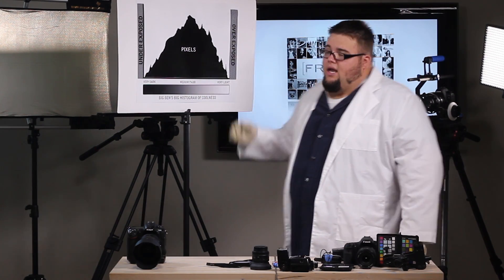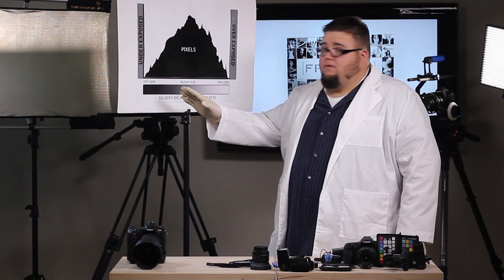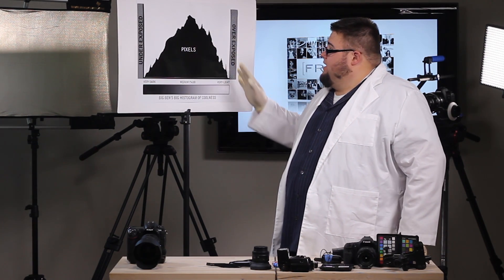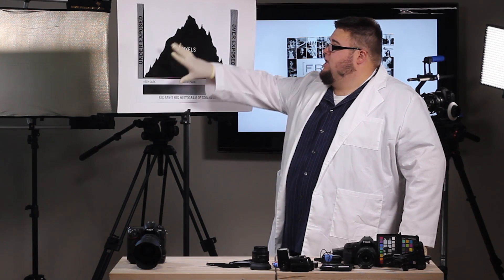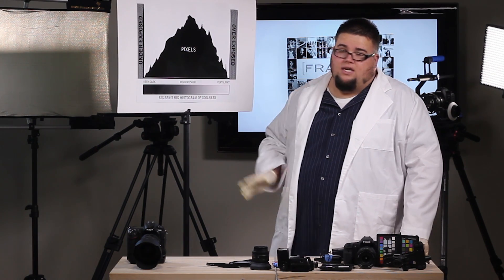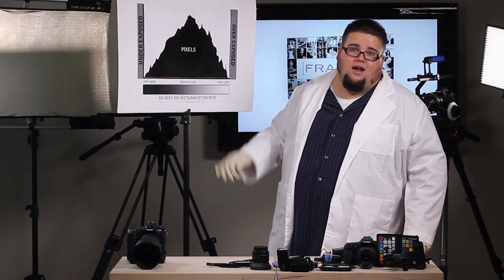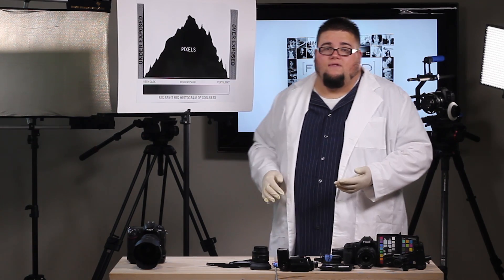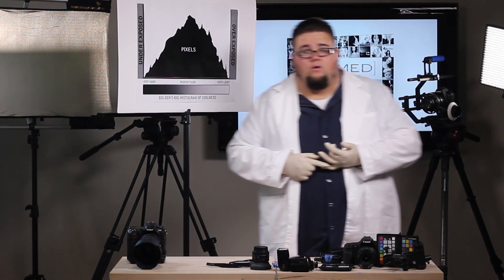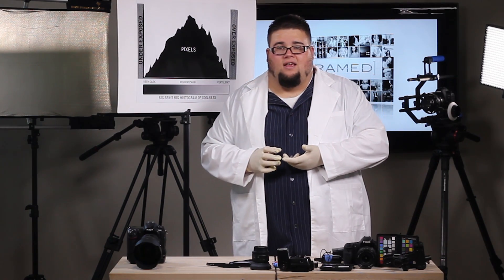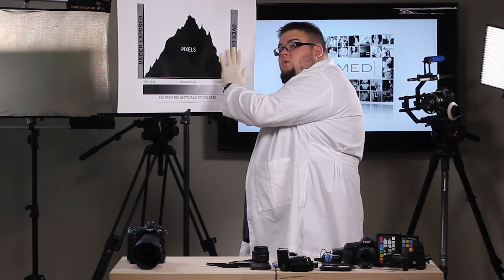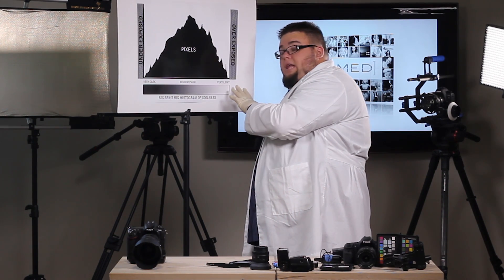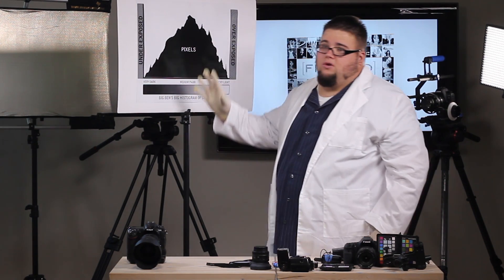So the key is when looking at a histogram, we want to make sure that we keep everything within the confines of the graph. So we want to keep everything in the middle, and obviously it doesn't have to be a perfect graph every time. Obviously environmental variables, the color and the tones of the image are going to impact that. Such as we were talking, if you're shooting a high key image, you're going to have more pixels toward the light side and if you're shooting a low key image, you're going to have stuff toward the dark side.